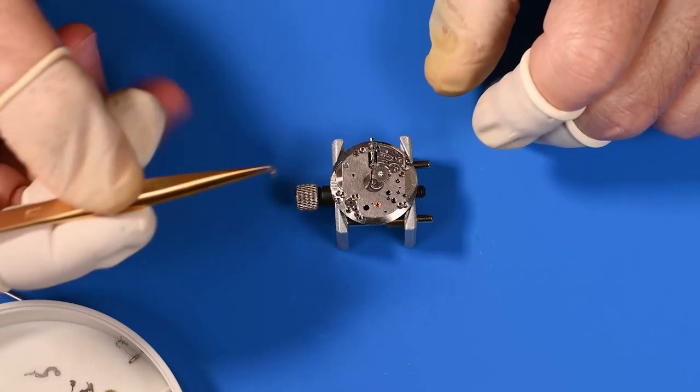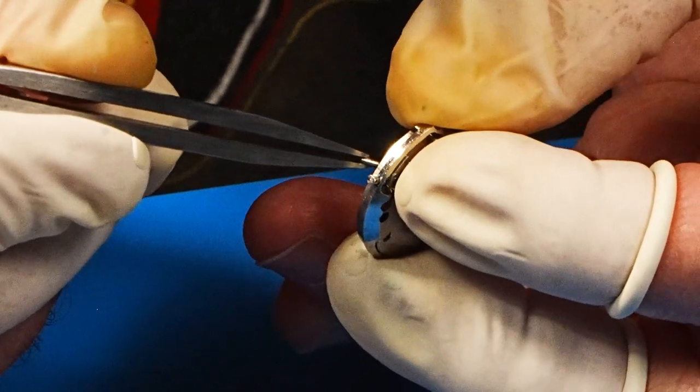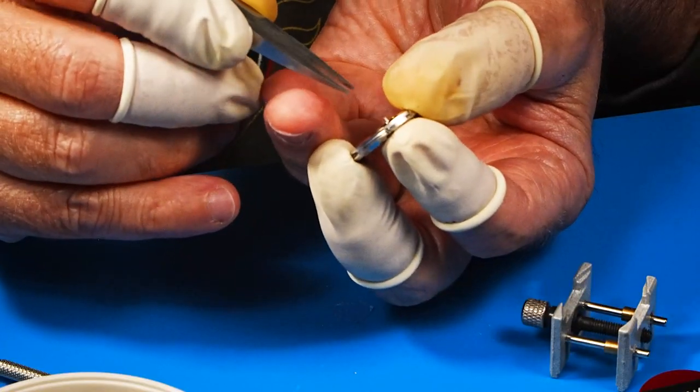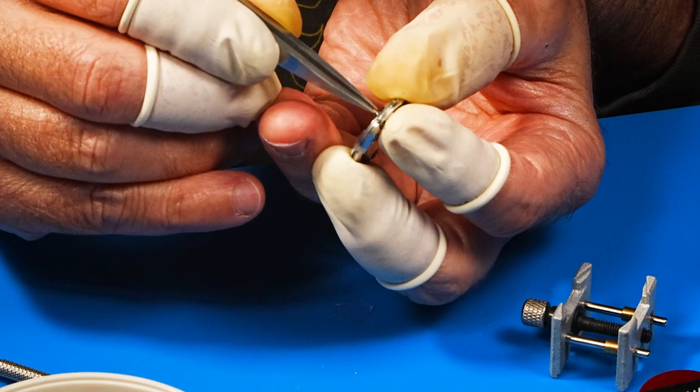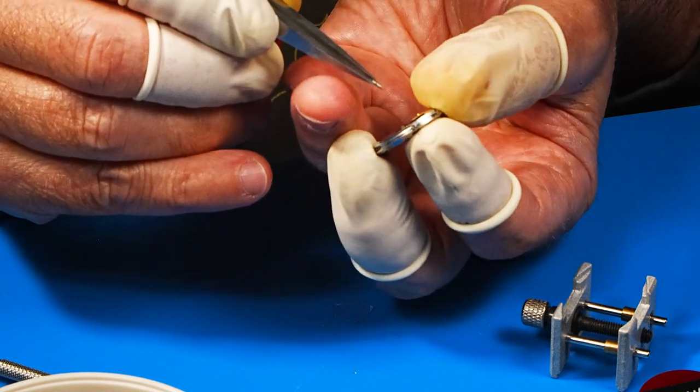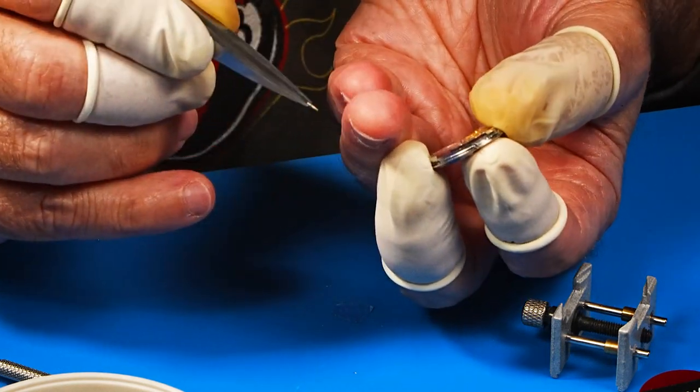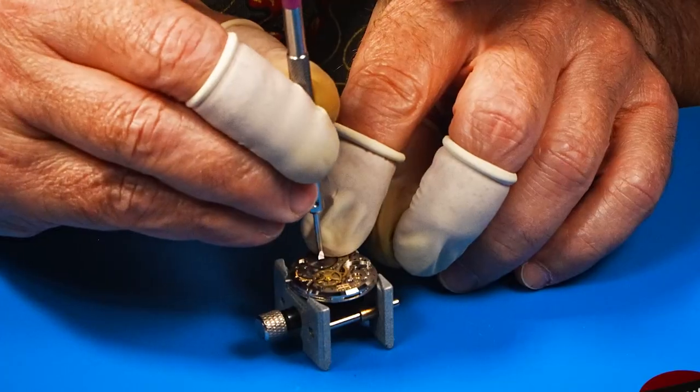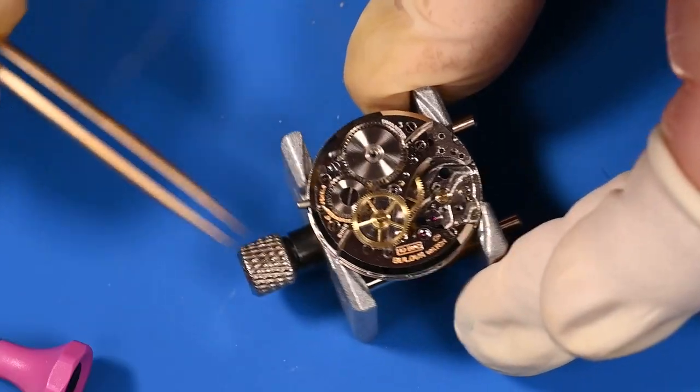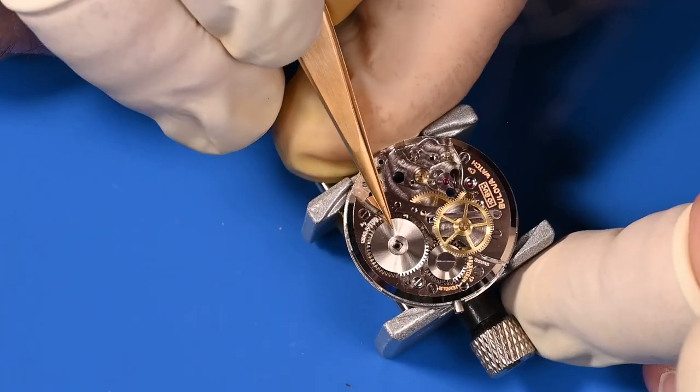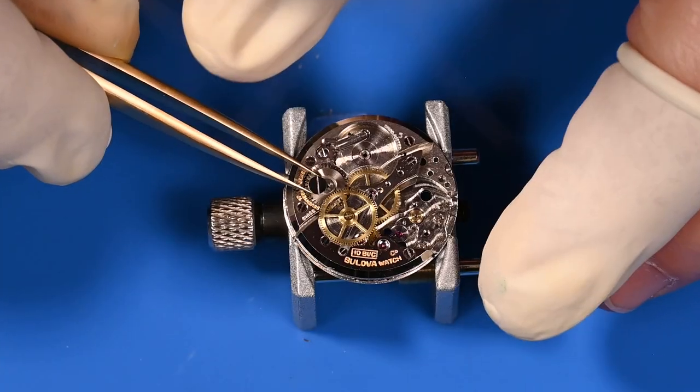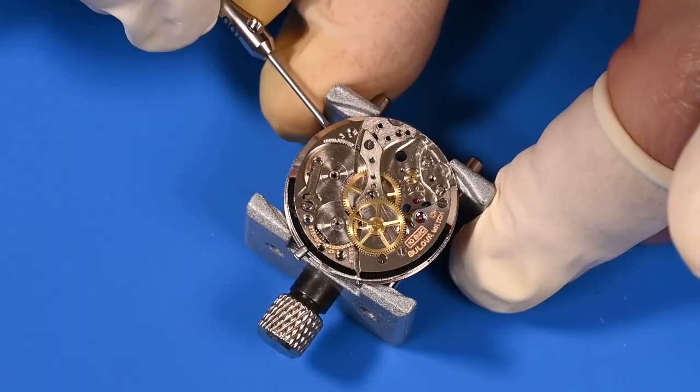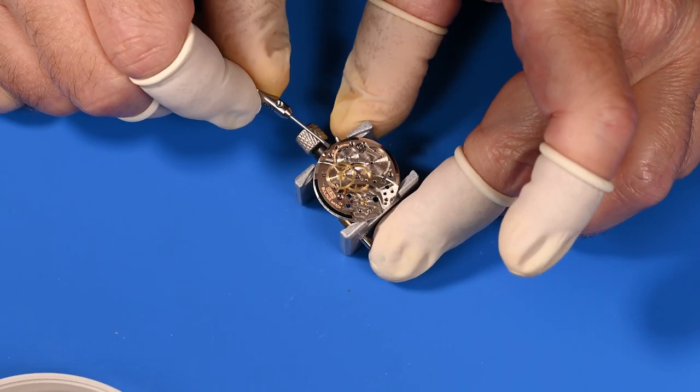It's time to install the setting lever, which is held in place by the setting lever screw on the other side of the movement. But there's a problem. I think we were supposed to have run this through before attaching that bridge plate. We're going to have to back this truck up. Two steps forward, one step back. Whoops, got it. I'll continue removing the components so we can remove the barrel bridge so we can get that setting lever post in. One more wiggle. And the barrel bridge comes free.